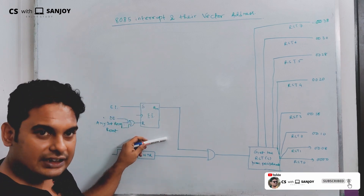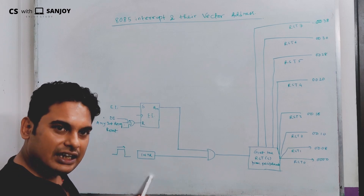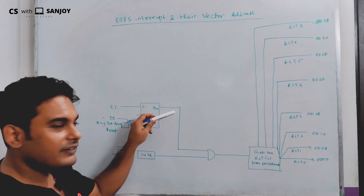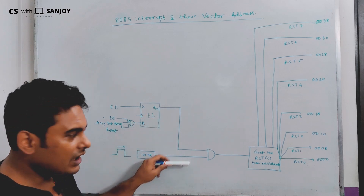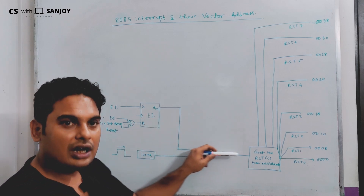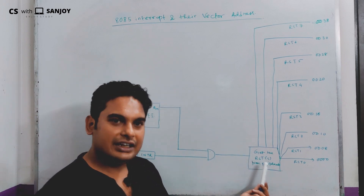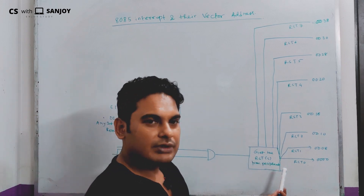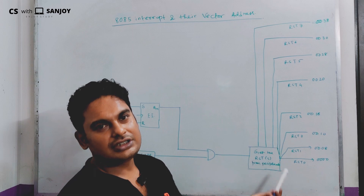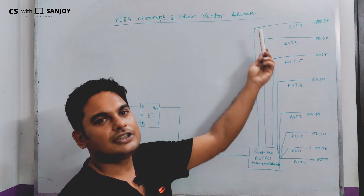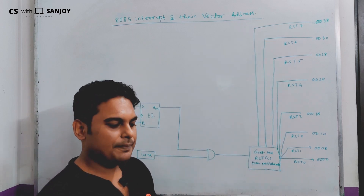The interrupt enable has to be set. Then we check the INTR line. If interrupt enable and INTR line are both set, then only we get the RSTs from the peripherals. These are the software interrupts.